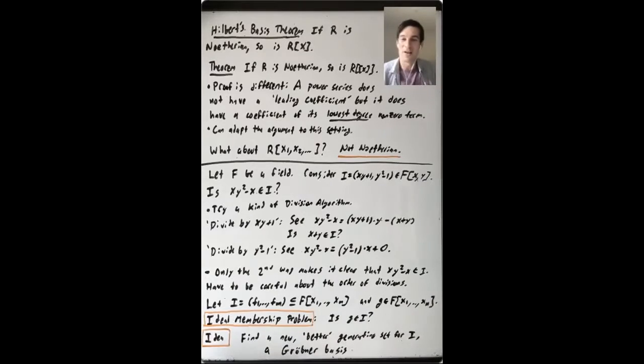But if you have a polynomial in a bunch of variables, it's not clear what the leading term should mean. You know, like if you have a polynomial that's X to the fifth plus X cubed Y cubed, which one of those is the leading term? Is it X to the fifth or is it X cubed Y cubed? And this depends on some kind of choice.